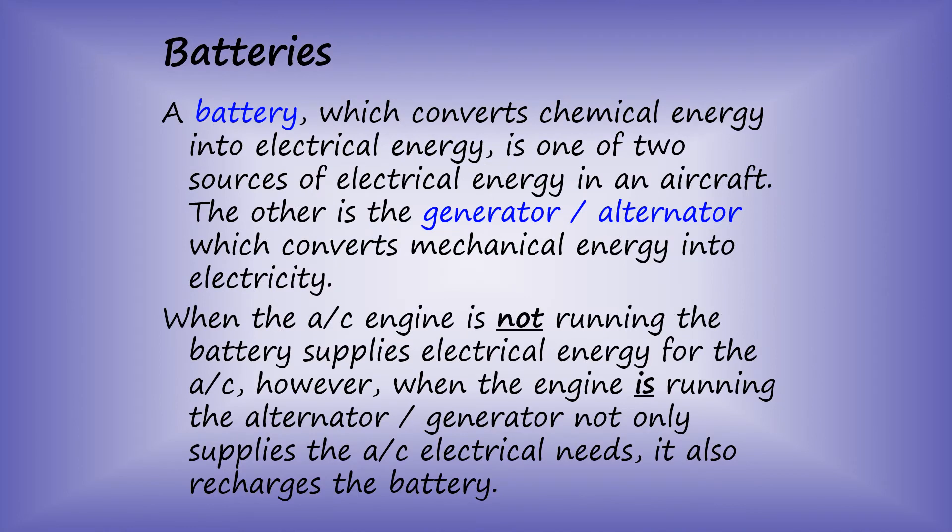Aircraft gets their electrical power from two sources: batteries and alternators. The batteries are used primarily for starting the engine. Once the engine has started, the aircraft's electrical needs are met by the alternator, which also charges the battery.